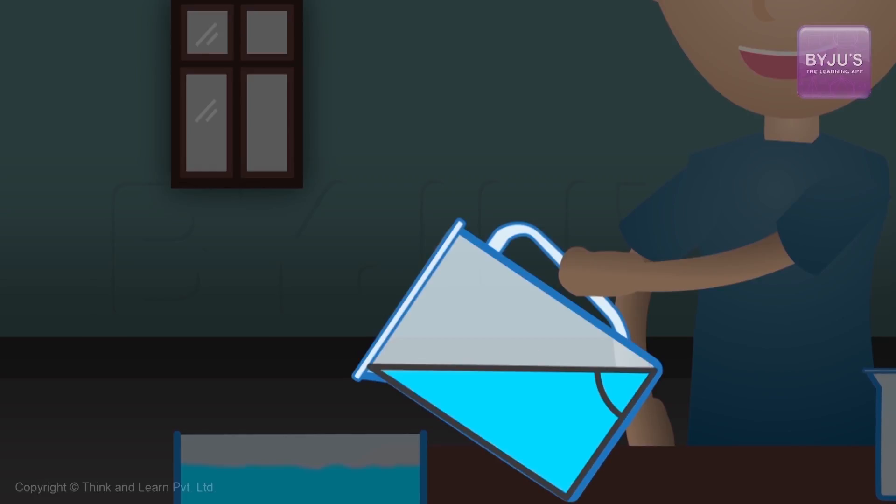How much quantity of water will have drained out when the level of water is diagonal to the jar wall? As it is clear from the screen, this will happen when 50% of the water has drained out.